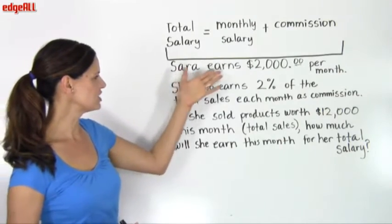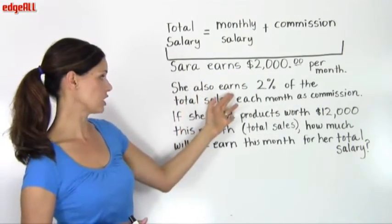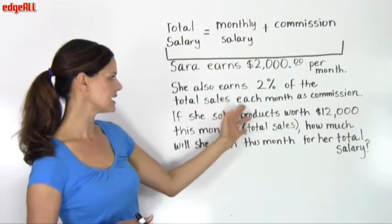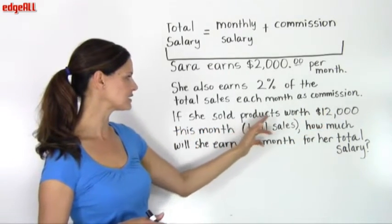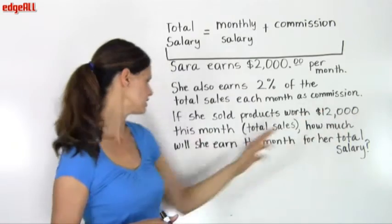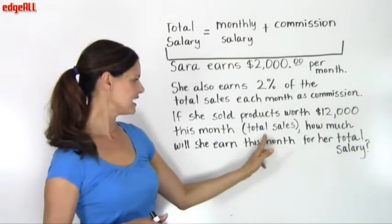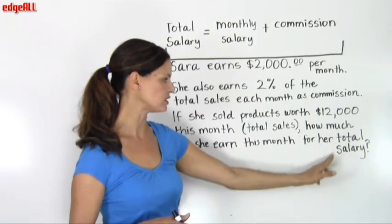Sarah earns $2,000 per month. She also earns 2% of the total sales each month as commission. If she sold products worth $12,000 this month, that's her total sales, how much will she earn this month for her total salary?